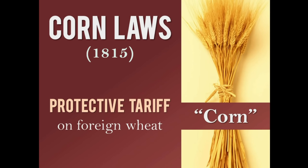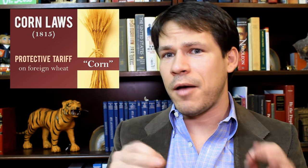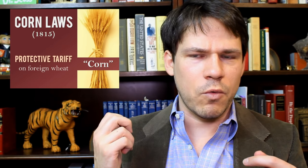The Tories used that control to pass laws like the Corn Laws in 1815, which were a protective tariff on foreign wheat — what the British called corn. It's worth noting this is an American English versus British English difference; in Britain, grain generally was referred to as corn.